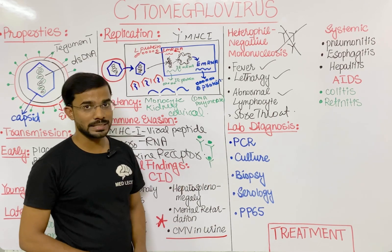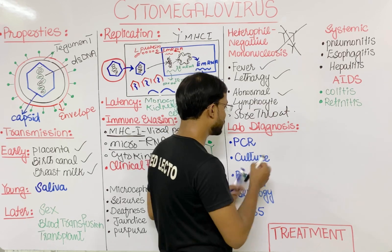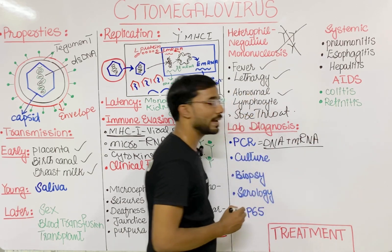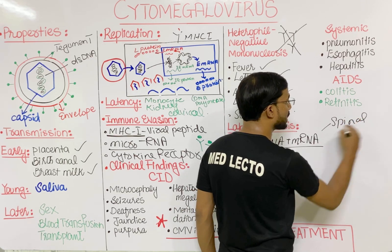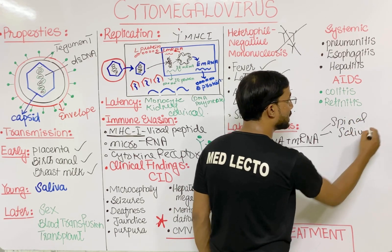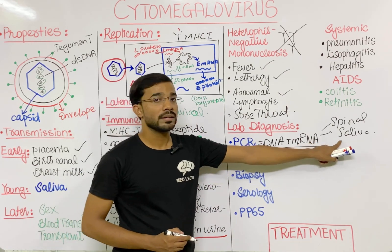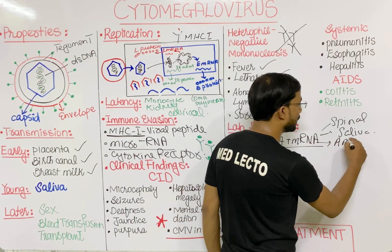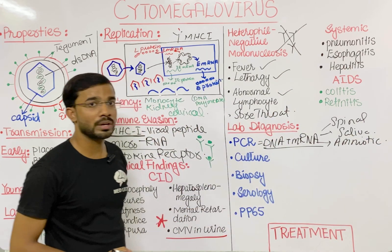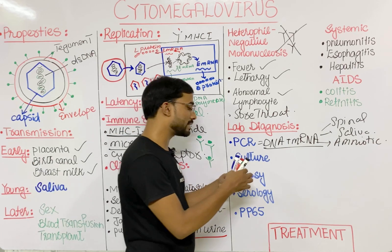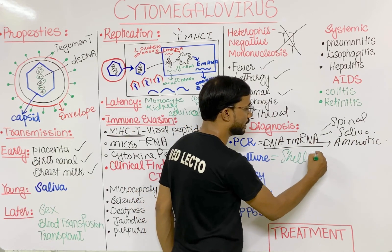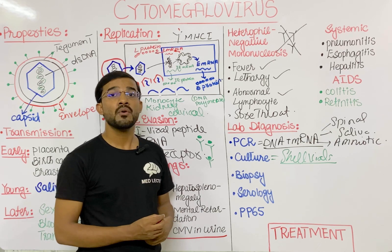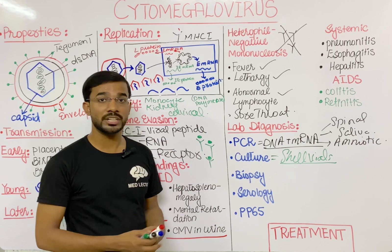For laboratory diagnosis, PCR is most important — you can check the DNA or messenger RNA of cytomegalovirus in samples like spinal fluid or saliva. Since CMV is present in the saliva of infected patients, PCR of saliva can be used. It can also be detected in amniotic fluid. Next is culture, which is mostly done in a shell vial. The virus is cultured and then detected through fluorescent antibodies, taking approximately 72 hours.